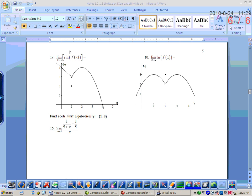Okay, so this is considered a composition of functions here on 17 and 18 because sine is one function and then f of x is another function. So the limit as x approaches 1 of the sine of f of x would be the same thing as the sine of the limit as x approaches 1 of f of x. And the graph is f of x. So what's the limit as x approaches 1 of f of x? 3. So I would be looking for the sine of 3.